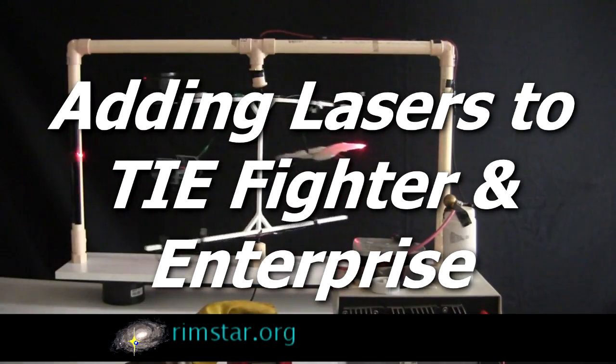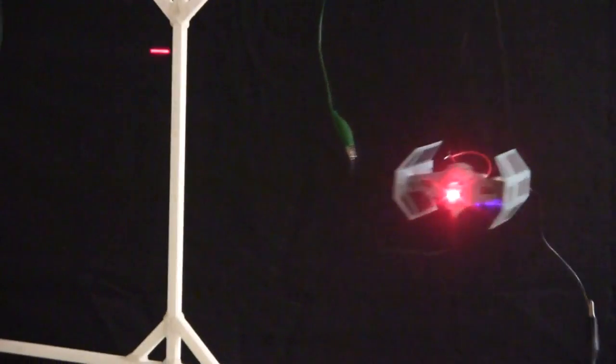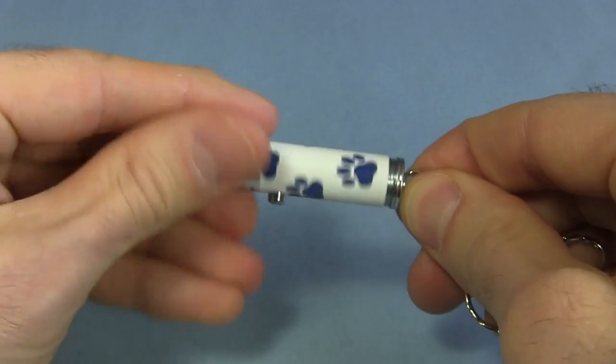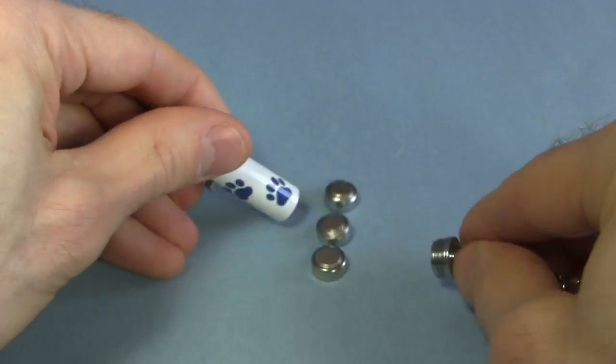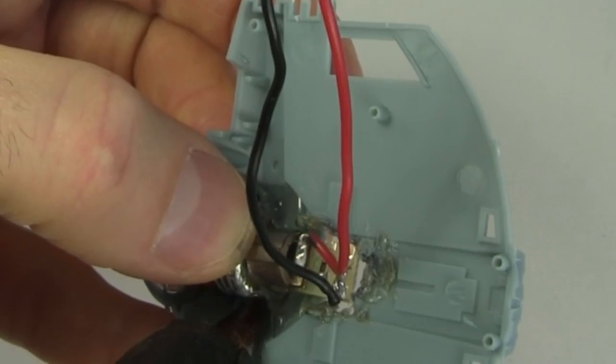Hi folks, for my Star Wars vs Star Trek Ion Propulsion video I went overboard and added actual lasers to the models. So I thought I'd show you the process of taking apart one of these cheap lasers, cutting it back to minimum size and installing some in my models.